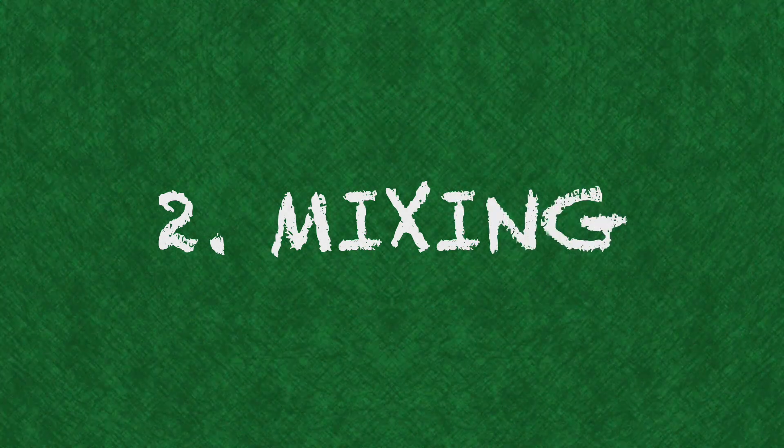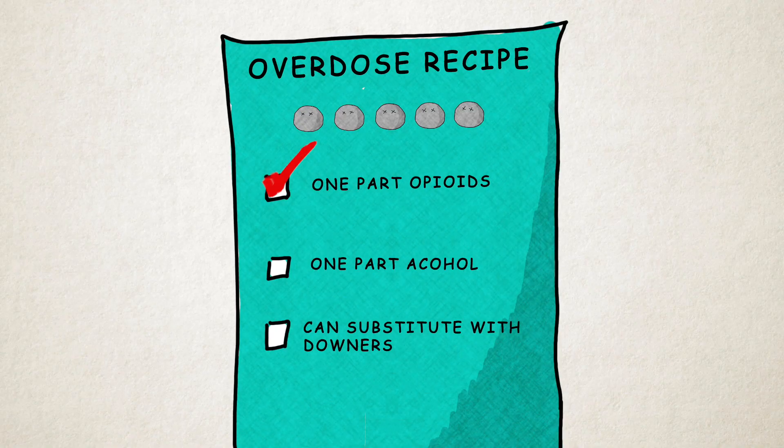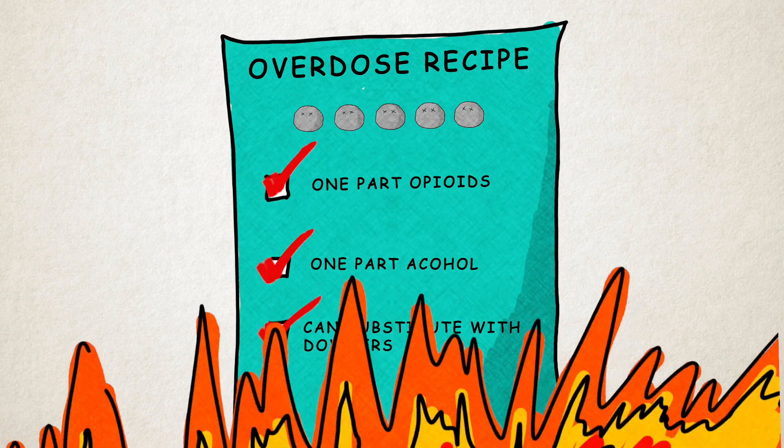Number two, mixing. Mixing opioids with other drugs, like alcohol or downers, is a recipe for overdose. It's like adding gasoline to a fire.